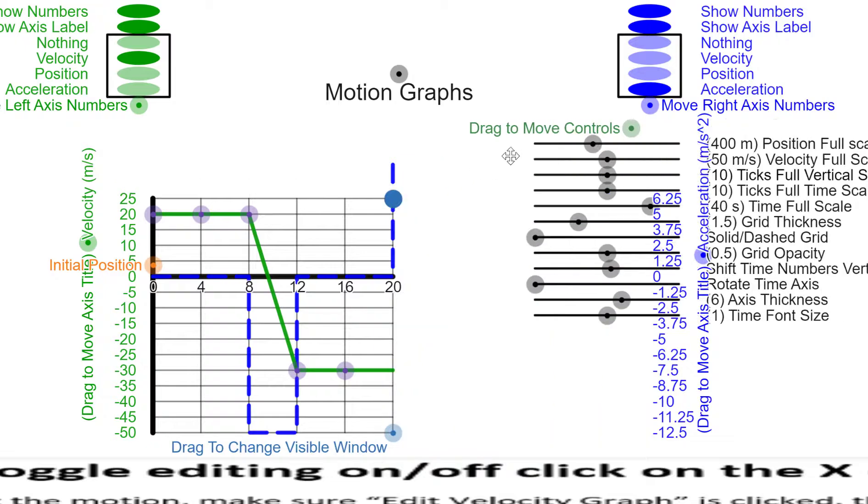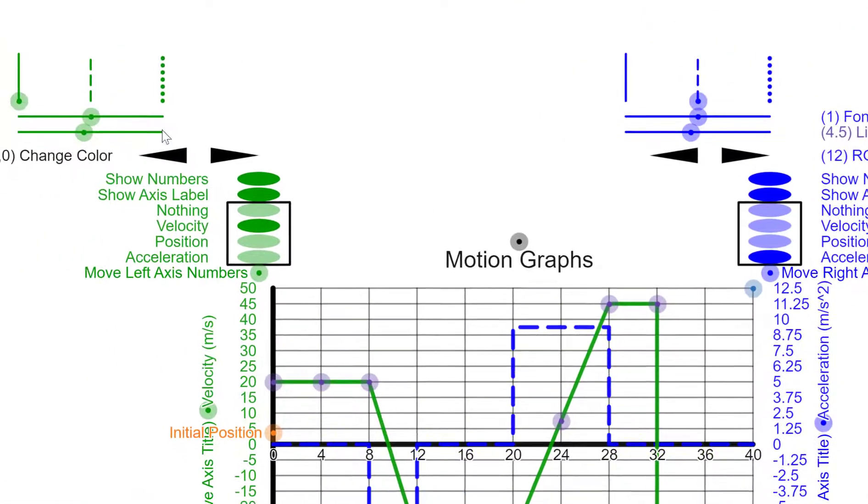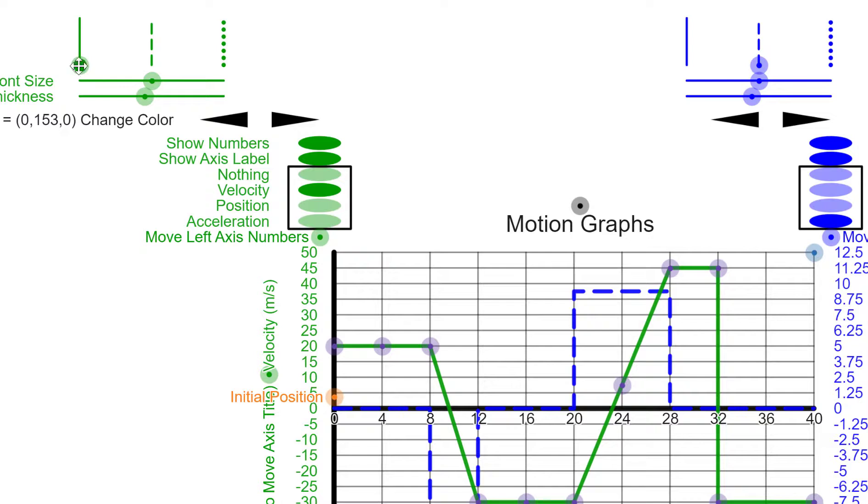You can drag these corners and change how much of the graph is shown. You can change the colors of the graphs. You can change between solid, dashed, and dotted graphs. You can change the font size of the axes.